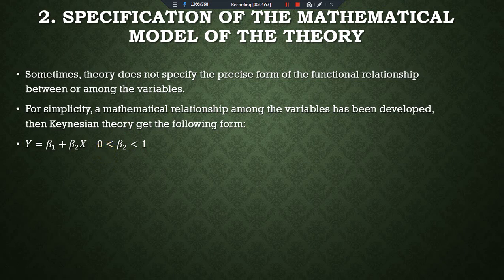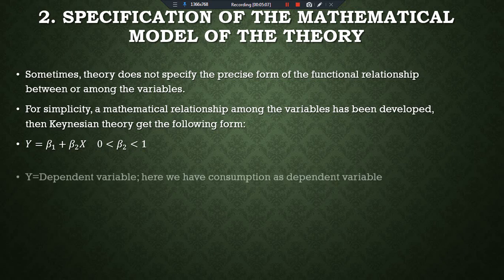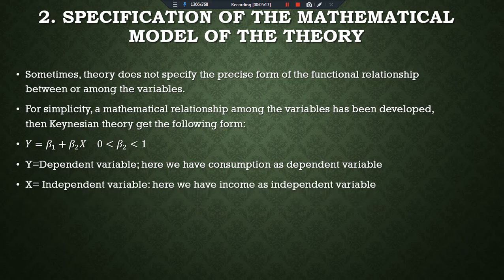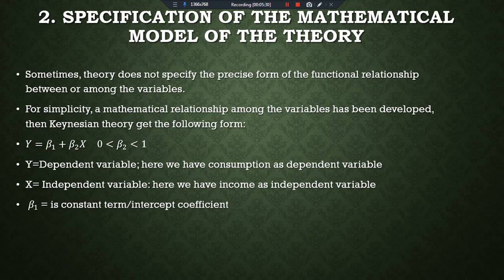This mathematical model reveals that consumption increases with income, but not as much as income increases. Here Y is the dependent variable representing consumption, X is the independent variable representing income, β₁ is the constant or intercept coefficient, and β₂ is the slope — the rate of change — representing how much change in the independent variable produces change in the dependent variable.